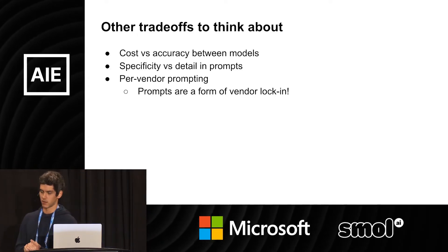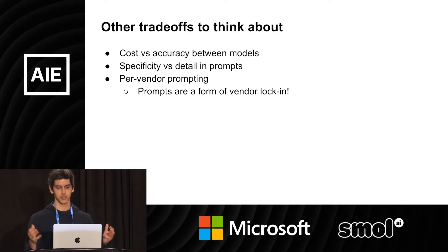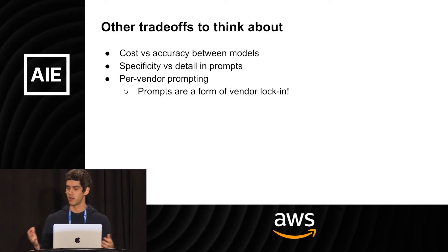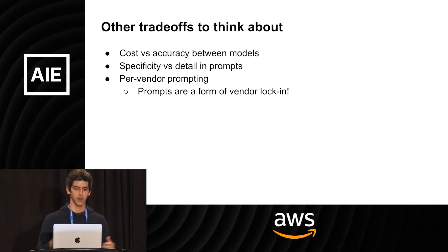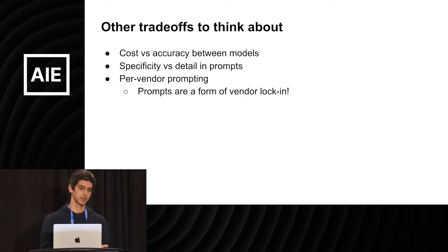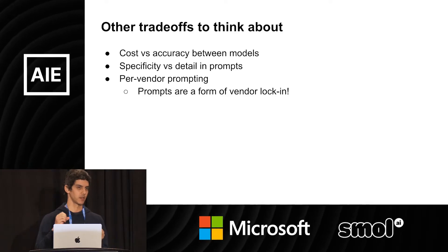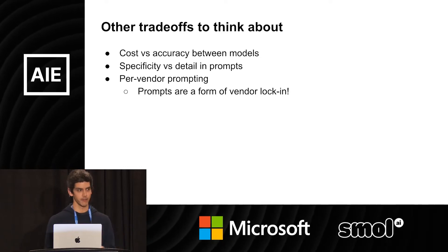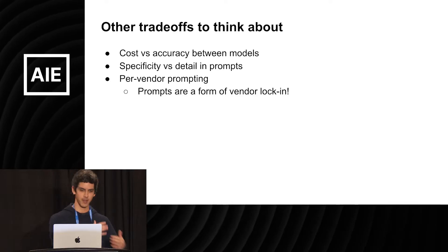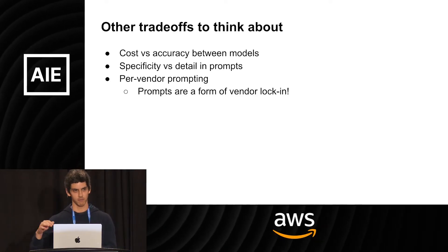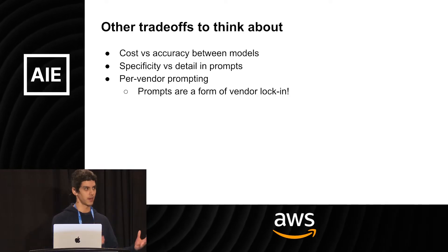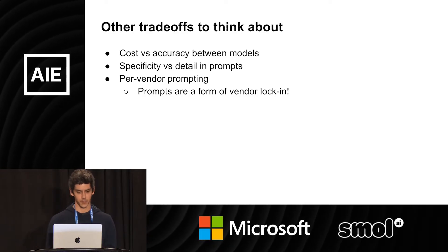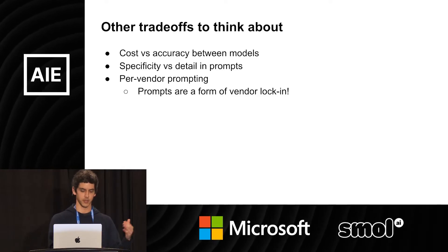Other trade-offs to think about: there's a fairly obvious cost versus accuracy trade-off between different models — at scale this became a difficult problem because it cost a lot. On specificity versus detail in prompts: it was very tempting to try to prompt out all the different failure modes that came out of the evals. Eventually we ran into diminishing returns and then negative returns. We realized that less is more — removing a lot from the prompt and giving the LLM room to do the right, most reasonable thing made a big difference. Resist the urge to keep piling on special cases in your prompt.